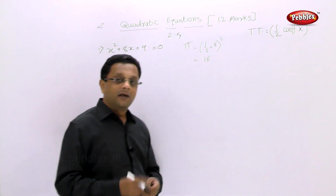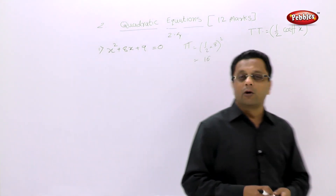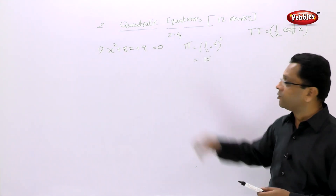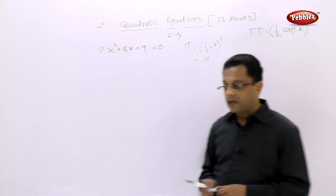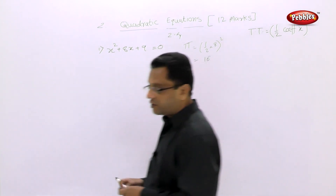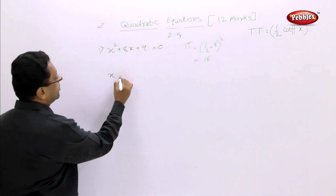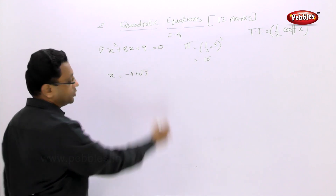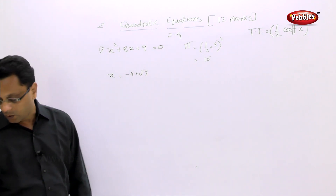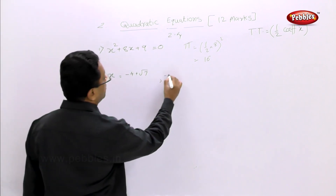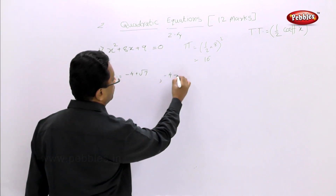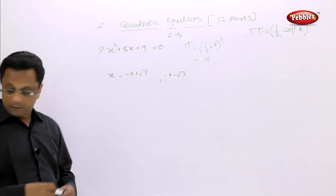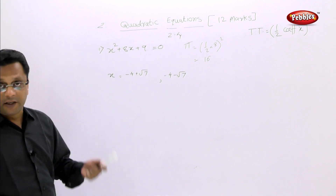There is nothing tricky that I need to solve on the board for this example — try it yourself. The answer is minus 4 plus root 7, or minus 4 minus root 7. Solve the example and check the answers.